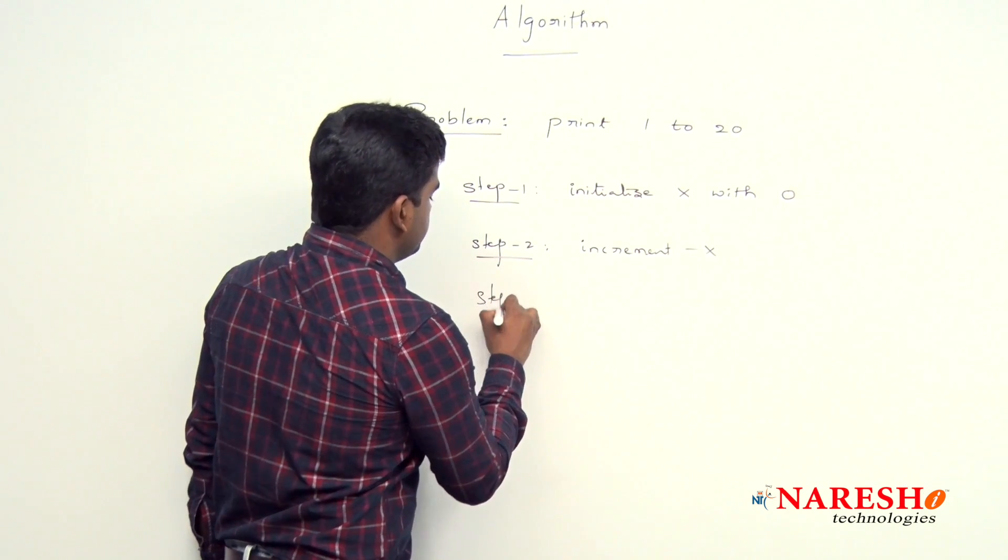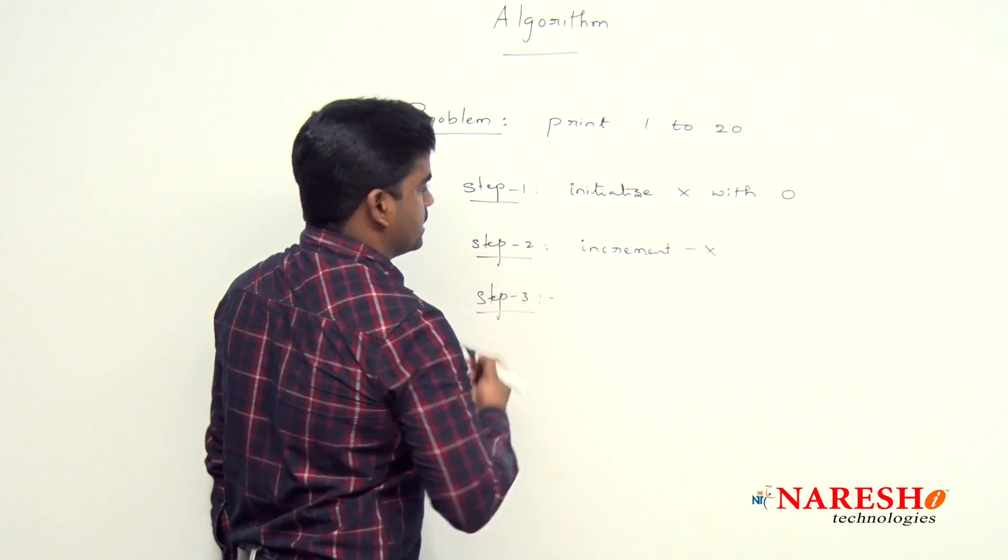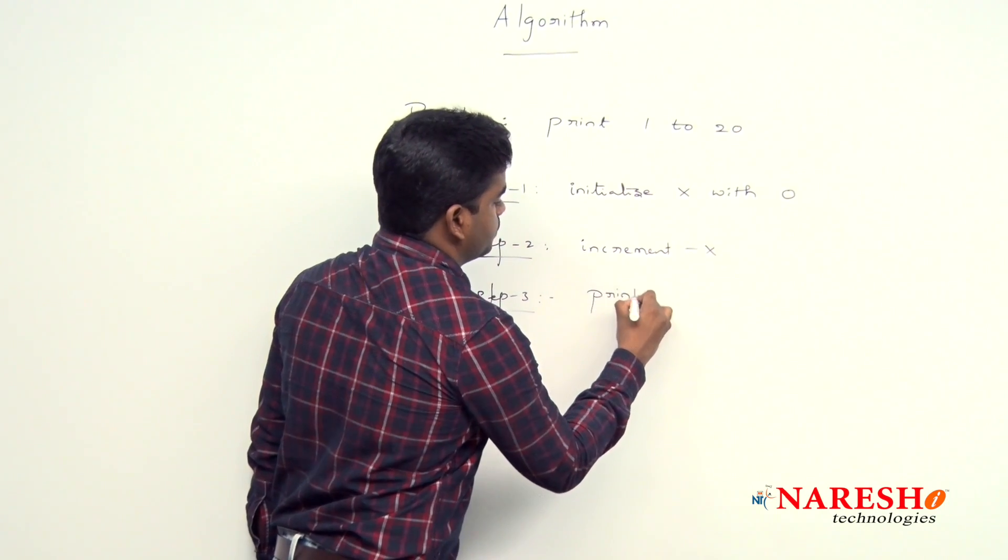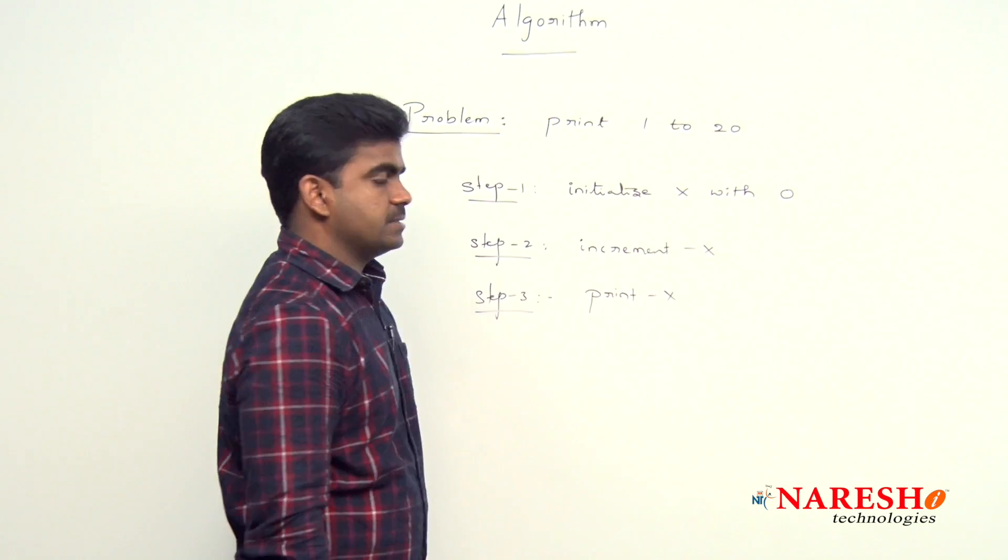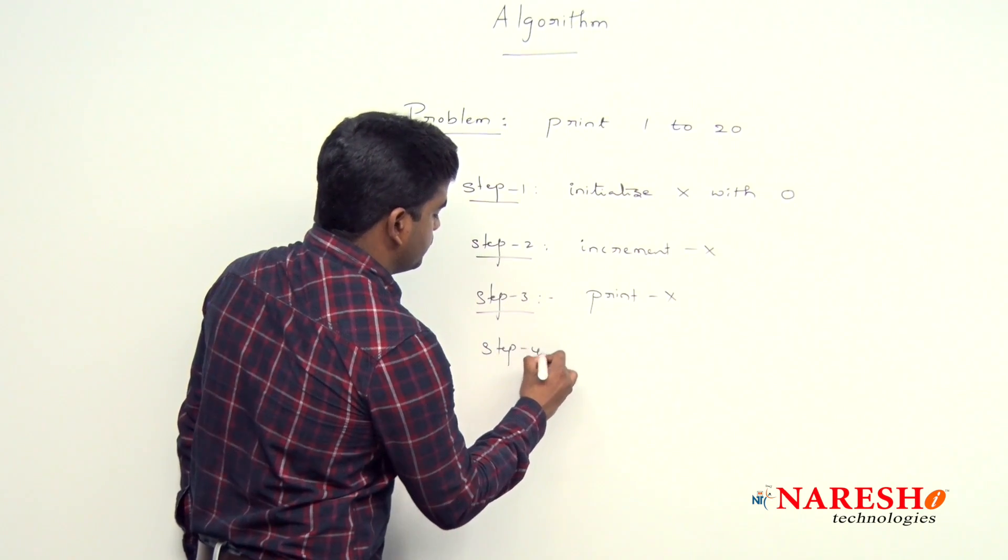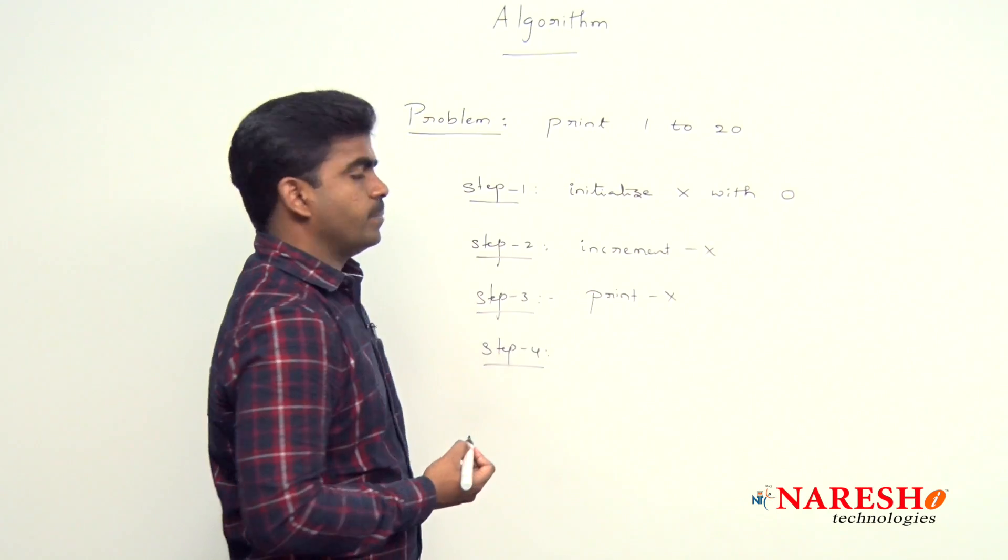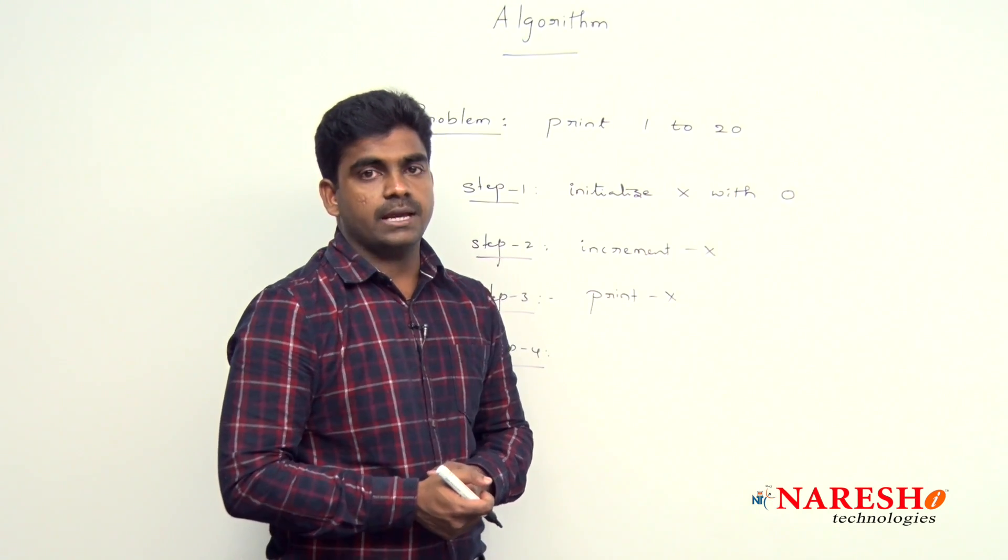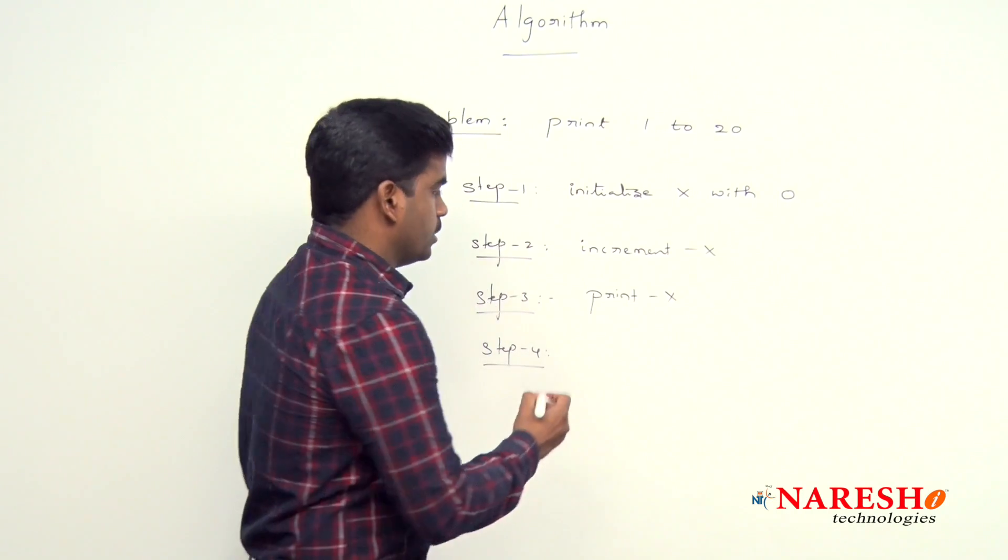And in the next step, we are printing that x value, print x. And next in that fourth step, we are checking the x value reach 20 or not.